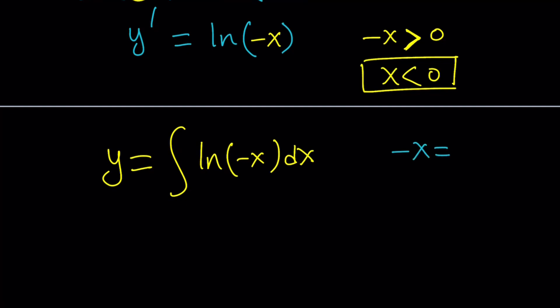Substitution. Negative x, I'm going to call that t. So that x becomes negative t. Multiply both sides by negative 1. And then d both sides dx equals negative 1 dt or negative dt.